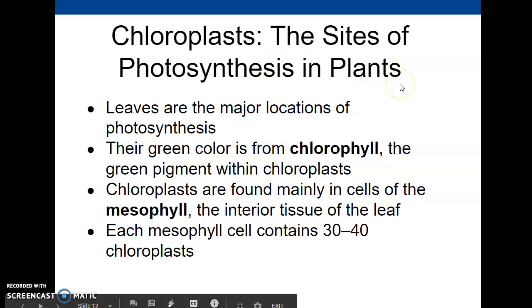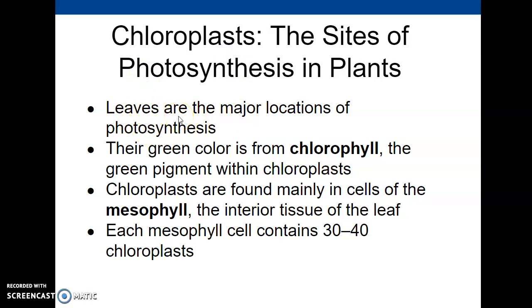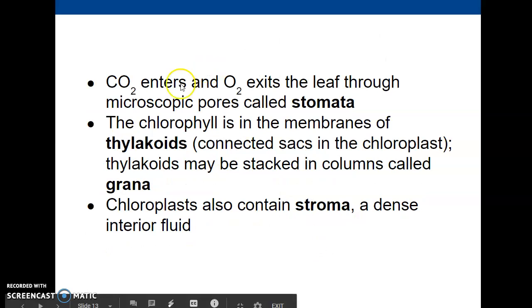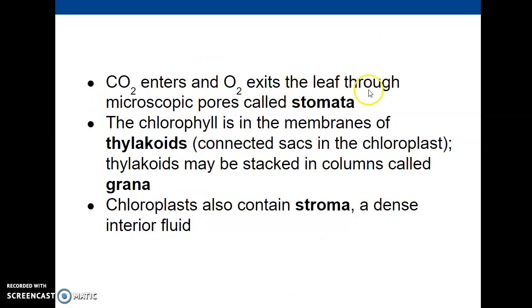Chloroplasts are the sites of photosynthesis. Going from macro to micro level: leaves are the major locations of photosynthesis and their green color comes from the pigment chlorophyll, a green pigment within chloroplasts. Chloroplasts are found mainly in the cells of the mesophyll, the interior tissue of the leaf, and each mesophyll cell contains about 30 to 40 chloroplasts. Carbon dioxide enters and oxygen exits the leaf through a microscopic pore called the stomata, and the chlorophyll is in the membranes of the thylakoids, which may be stacked into columns called grana.